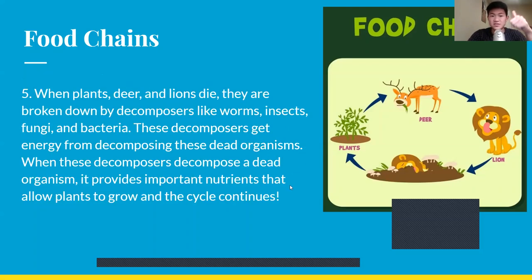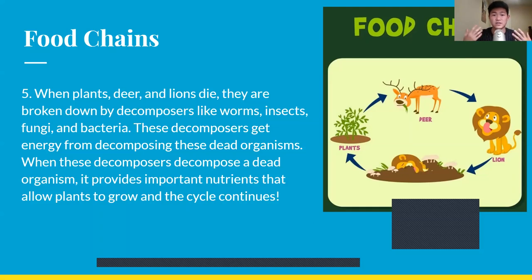When plants, deer, and lions die, they're all broken down by decomposers such as worms, insects, fungi, and bacteria. These decomposers get energy from decomposing dead organisms — breaking down their tissues. When decomposers break down a dead organism, it provides important nutrients in the soil that allow plants to grow, and then the cycle continues. Energy just flows through the system — it's always conserved.